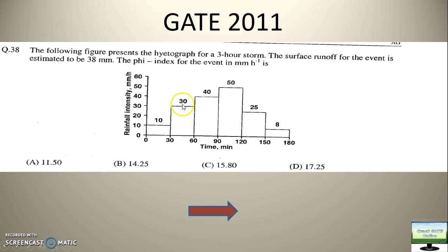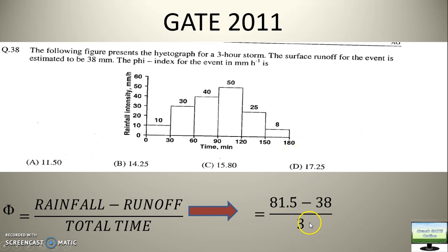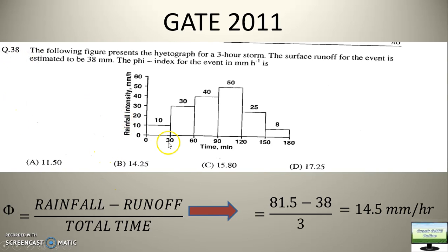Similarly, for half an hour at 30 mm per hour, you calculate the amount of rainfall. That will become equal to 81.5 mm. Then what is runoff? Runoff is given in the question itself — surface runoff is 38 mm. Now we deduct rainfall minus runoff divided by total time. What is the total time here? 180 minutes — that means 3 hours. So your phi index comes to 14.5 mm per hour. Now you will see that the calculated answer is D. But wait — we have to extend the concept of phi index.